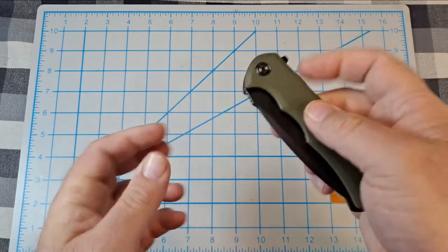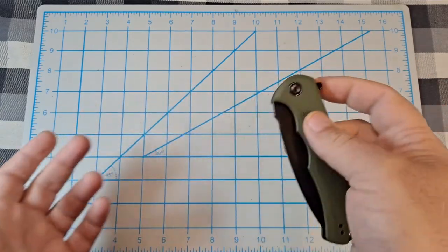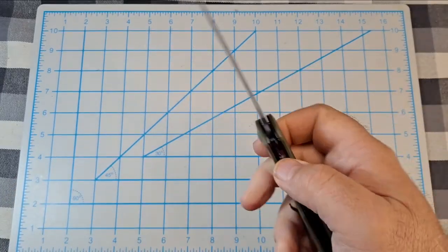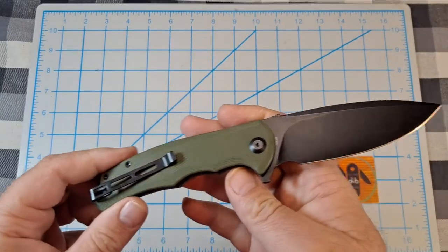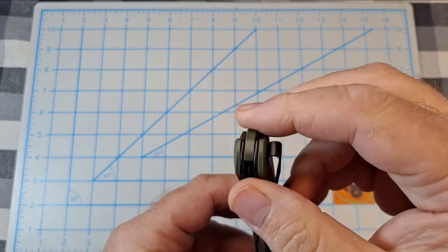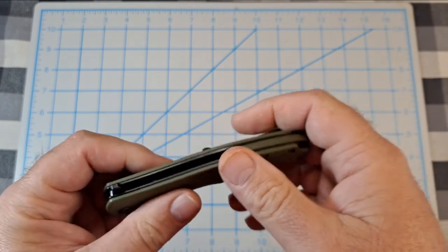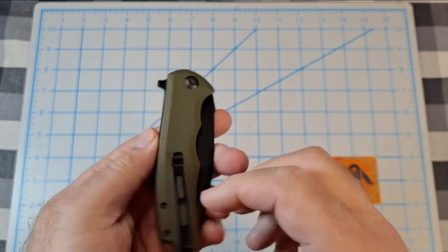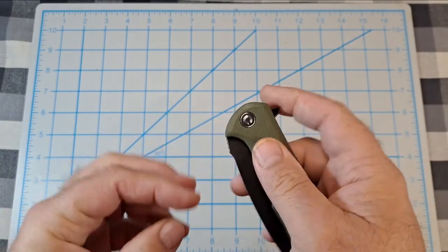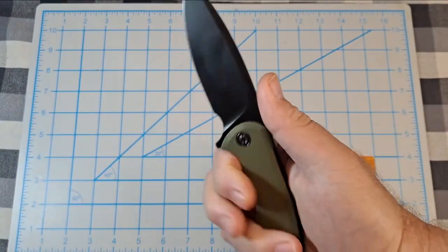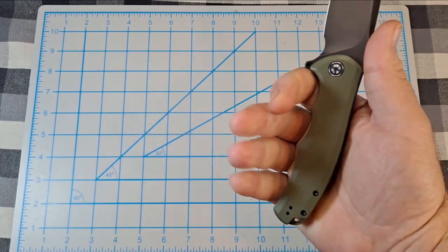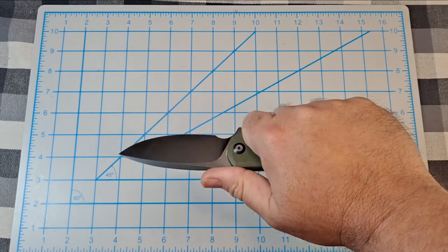Obviously it's a flipper with a flipper tab, one way of deployment. I mean, you can open it like that, but the flipper works pretty good. I tell you, for being one of the first four models that they came out with, it's pretty nice. It's large, nice, so plenty of room in the handle.